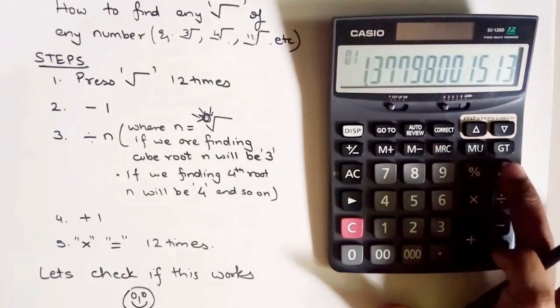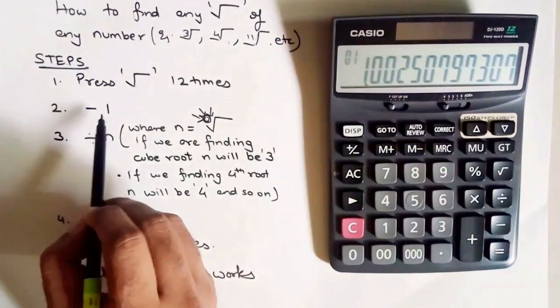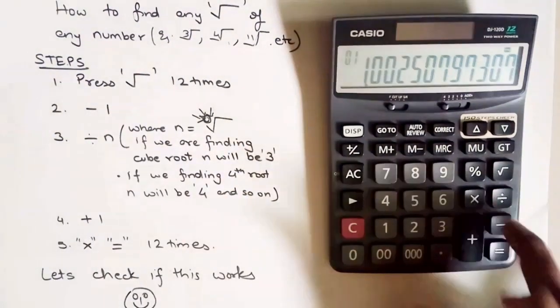1, 2, 3, 4, 5 and count to 12. Here I am done with my first step. Second step minus 1, so minus 1.